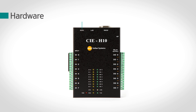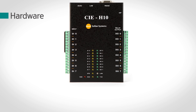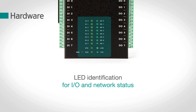The power is DC 5V voltage. There are a LAN port for network communications and RS-232 for serial communications. There is also an ISP switch for firmware and HTML upgrades. The product's input, output, and network status can be identified with LED.